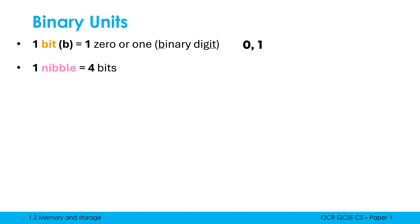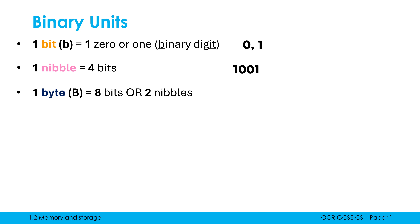The next smallest unit is a nibble — bit of a silly word, but there we go. A nibble is four bits, and the nibble hasn't got a shorthand unit, so you won't see one. A byte is eight bits, or you could also say it's two nibbles. It has the uppercase B as its shorthand unit, so pay attention: bit is lowercase b, byte is uppercase B. Often we write bytes grouped as two nibbles with a space in between.